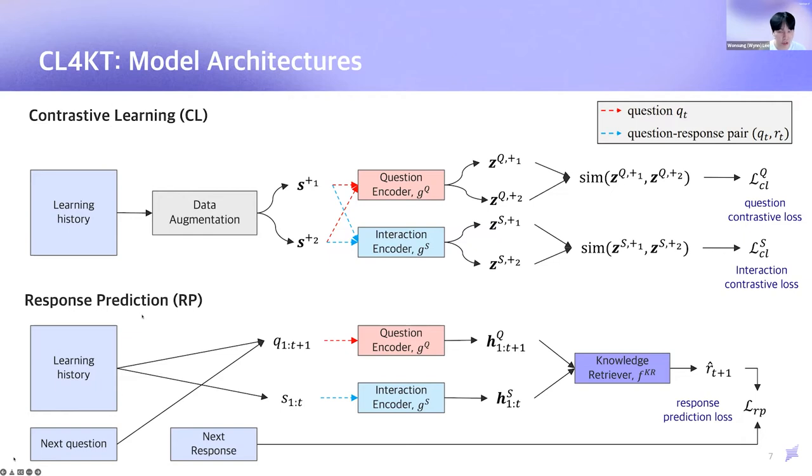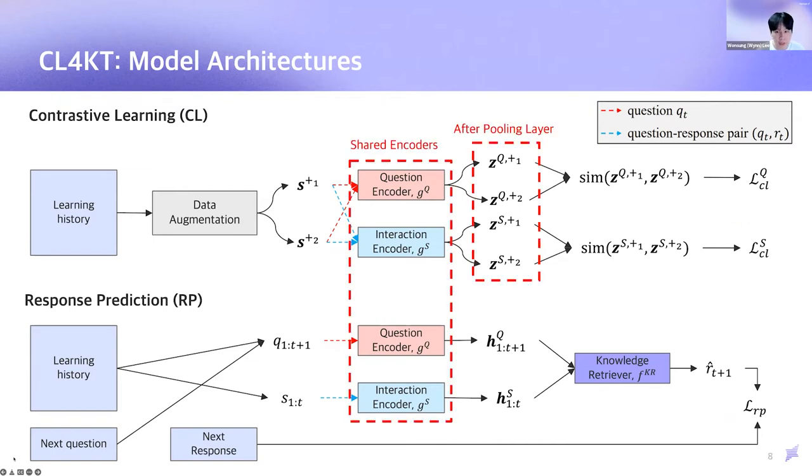For the response prediction part, which is our primary task, we use original data without data augmentation. Given a learning history and the next question, we perform a typical knowledge tracing task. After getting question representation, HQ, and interaction representation, HS, we feed them into knowledge retriever module to get final knowledge representation and predict the response. Given the ground truth response, we can calculate the response prediction loss here. What I want to highlight is that the question and interaction encoders are shared across both contrastive learning part and response prediction part. Also, the representations of the augmented history, denoted by Z, are actually obtained by a pooling operation, like average or max pooling.